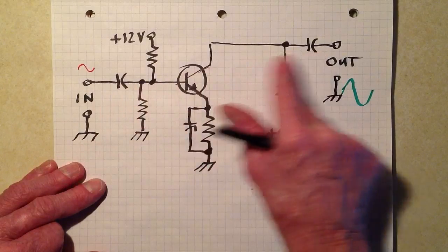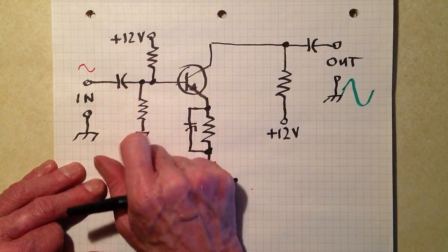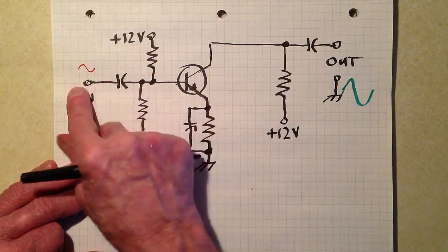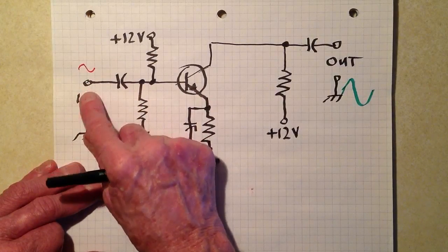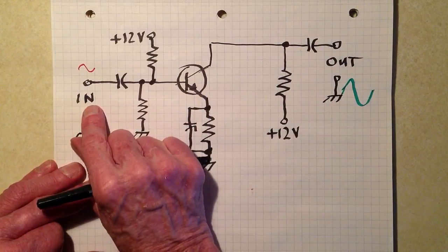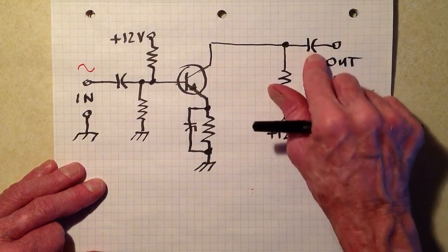These capacitors allow the signal to pass through, but they prevent the direct current bias from messing up the input, or messing up the output, that is to say messing up whatever precedes the amplifier, or messing up whatever follows the amplifier.